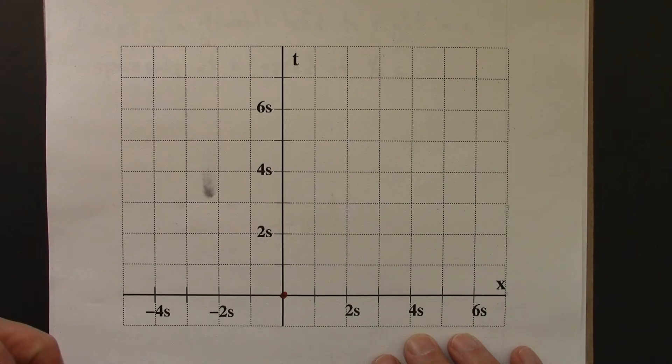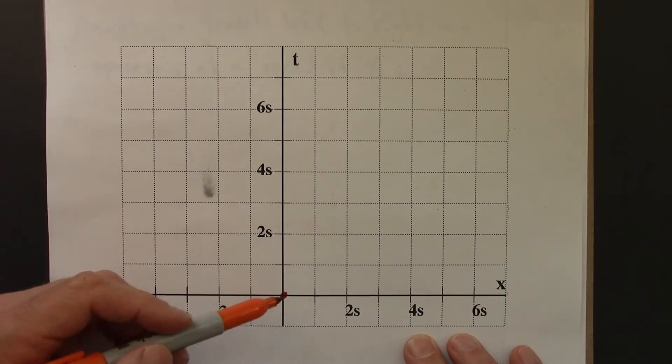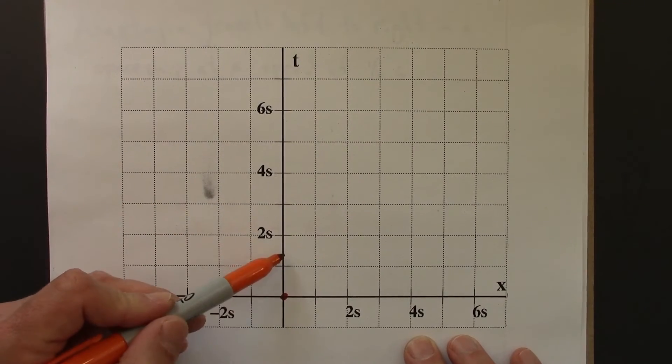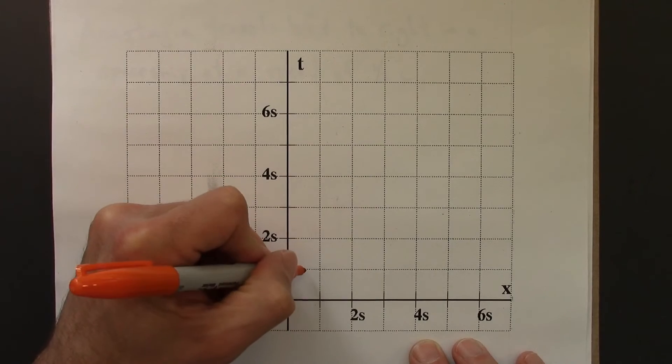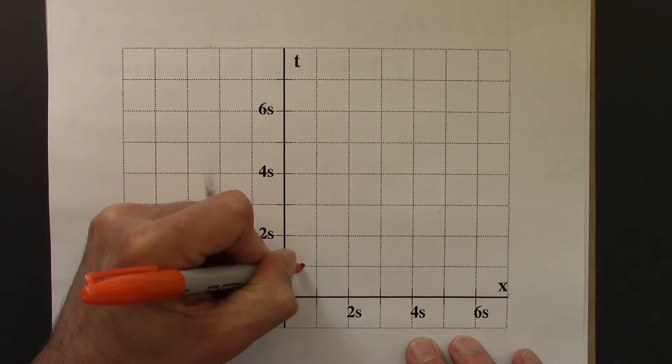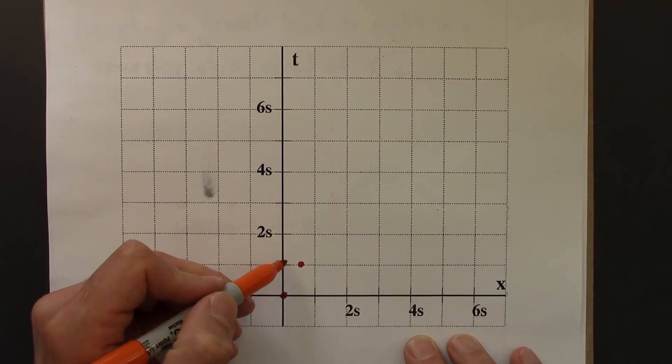One second later in time, she has moved a half second to the right. So one second in time, time goes up on this diagram, so this is one second. And then she moves a half second to the right. So that's about half a second.